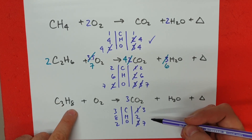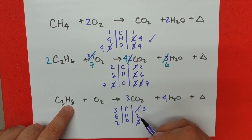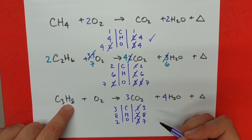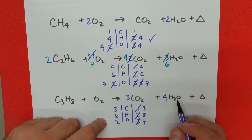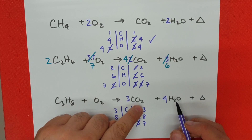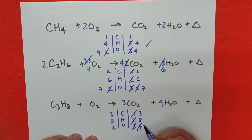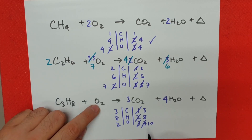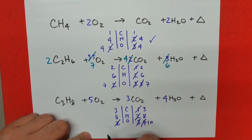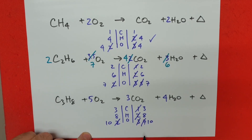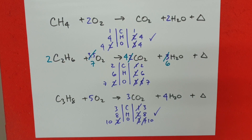Next, let's do the hydrogen. We have eight here and two on the other side, so we add a four — this changes into eight. Now this also changed our oxygen count on the product side: three times two is six, plus four is ten. Ten is a nice even number which we can divide by two, so our last step is to add a coefficient of five, making it ten. We have balanced numbers: three, eight, and ten. We're good.